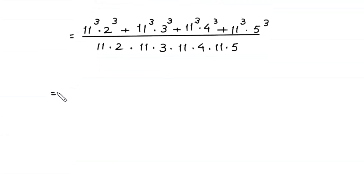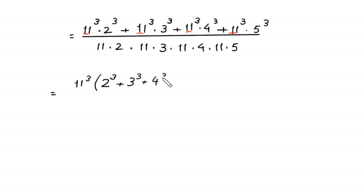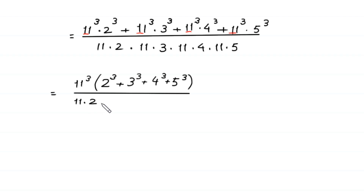Next, as we can see in this expression we have a common factor 11 cubed in the numerator. So we factor out 11 cubed, leaving in brackets: 2 cubed plus 3 cubed plus 4 cubed plus 5 cubed, divided by 11 times 2 times 11 times 3 times 11 times 4 times 11 times 5.